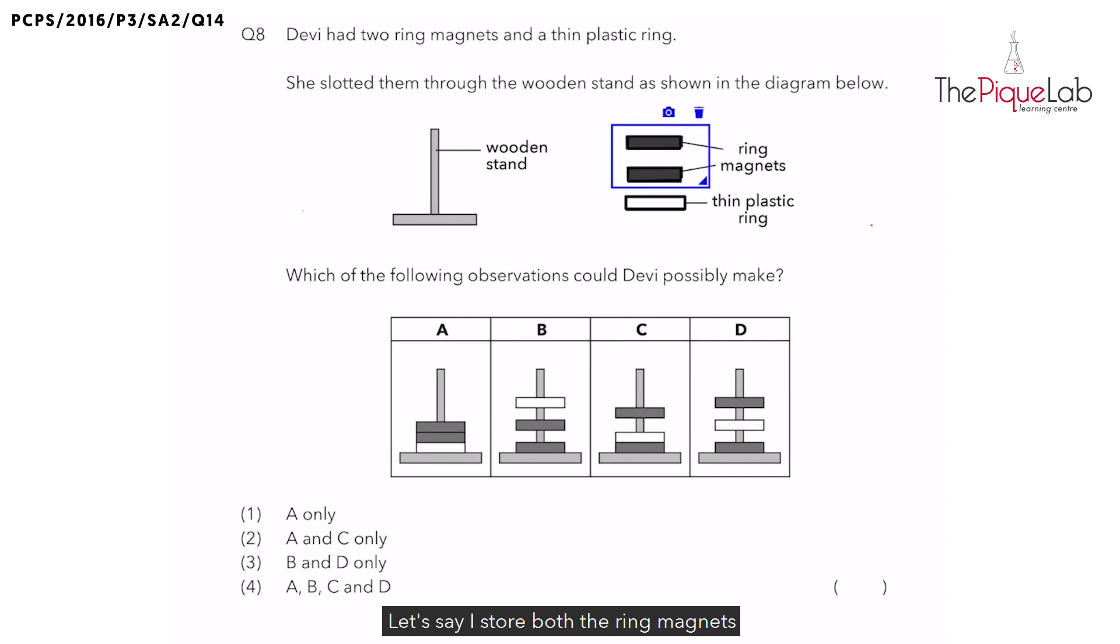Let's say I slot both the ring magnets through the wooden stand, just like this. The magnets are either going to attract or repel. When they attract, it means unlike poles are facing each other, causing them to attract. There is also a chance where the magnets could be repelling. And when they repel, it means the like poles of both magnets are facing each other. So if you realize, when the magnets are repelling, this magnet over here is floating and hovering over the other magnet.